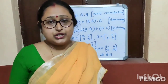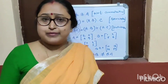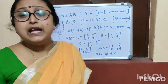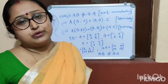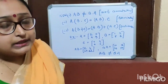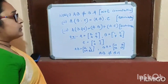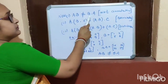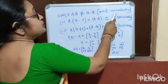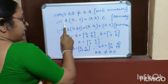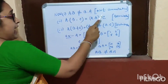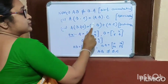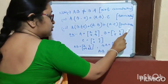Now the question is: is matrix multiplication commutative, associative, or distributive? Matrix multiplication is not commutative. But it is associative and distributive.